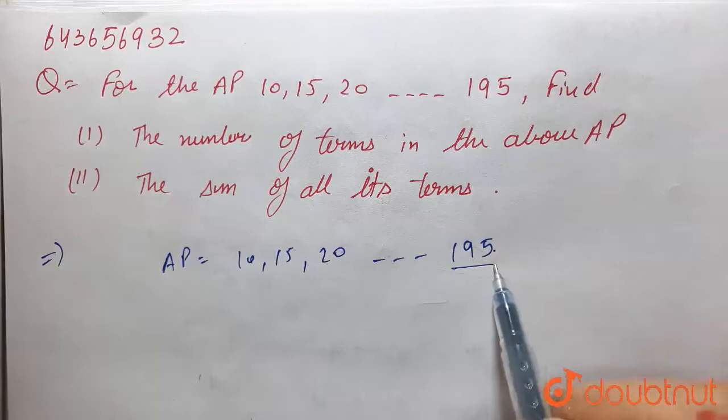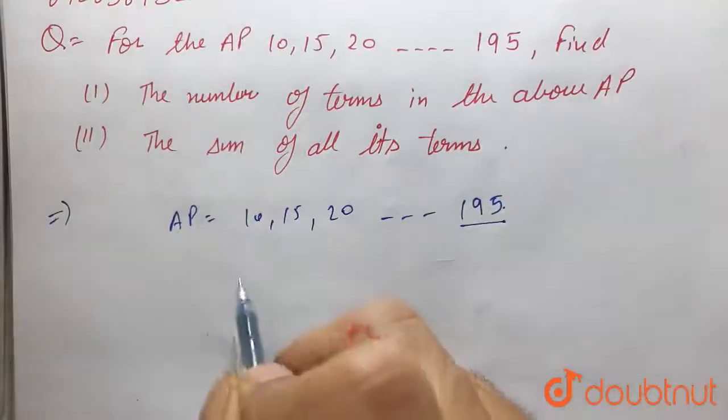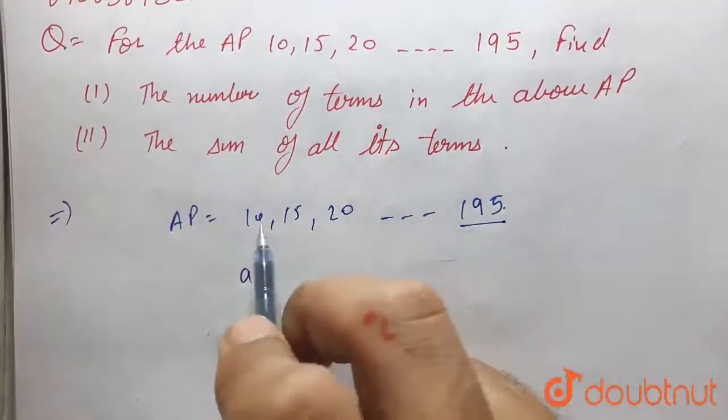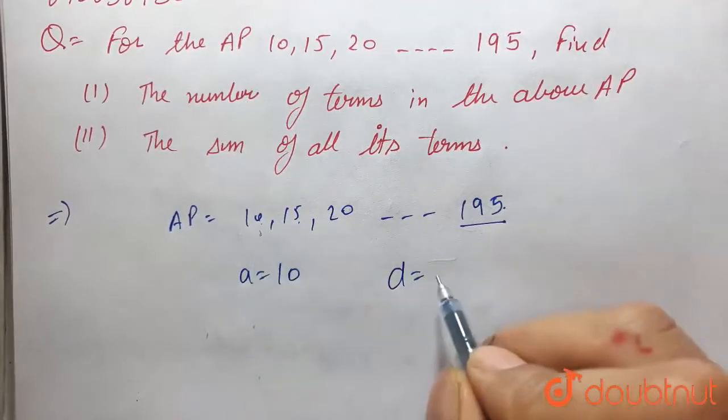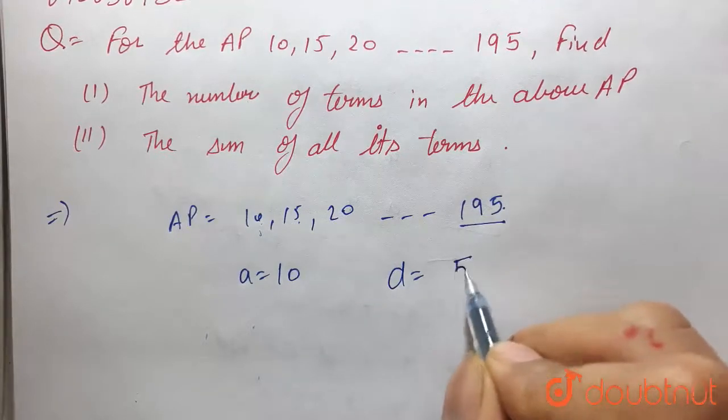Here the last term is given. For this AP, a is equal to 10 and d is equal to a2 minus a1, that is 15 minus 10, which is equal to 5.